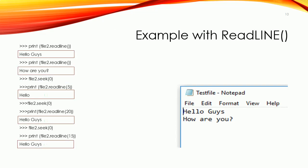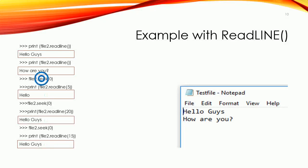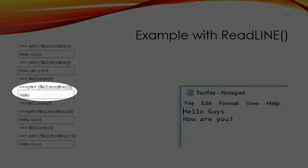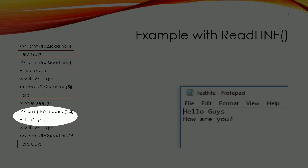Let's explain readline() through examples. Back to the same file with two lines: 'Hello, guys.' and 'How are you?' The first time we call readline(), it will read the first line: 'Hello, guys.' The second time we call readline(), it will continue reading and return the second line. Now, calling seek(0) returns our pointer to the beginning of the file. Then readline(5) will read the first 5 characters from the beginning, which is 'hello'. Again calling seek(0), then readline(20) — since 20 is bigger than the length of the first line (which is 10), it will stop at the end of the first line and print 'Hello, guys.' — it will not print anything from the second line.